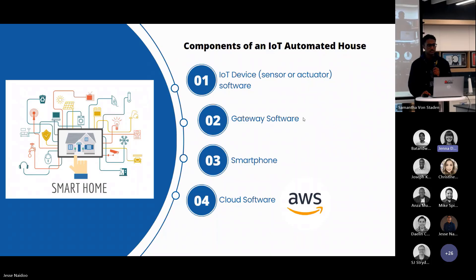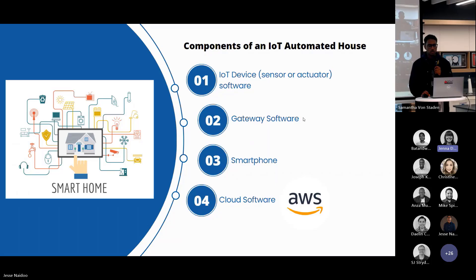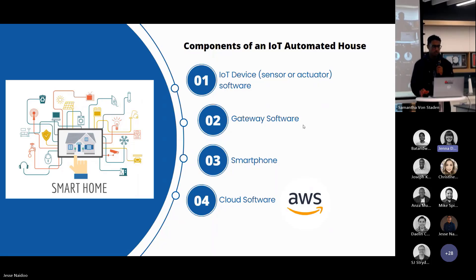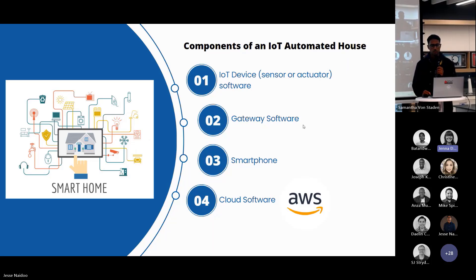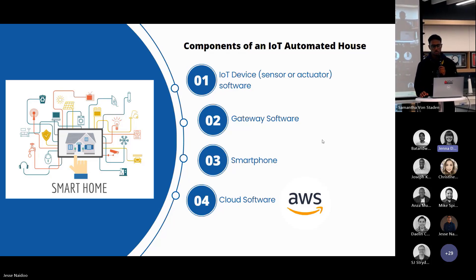The third component is a smartphone. You can install any app on your laptop or your phone to remotely control all the IoT devices in your house. The fourth and probably most important component is cloud software. The cloud software completes the end-to-end solution of your home automation. You can configure AWS, Azure, or Google's cloud software to connect to your smart home, and it will allow you to manage, control, and monitor all your IoT devices.